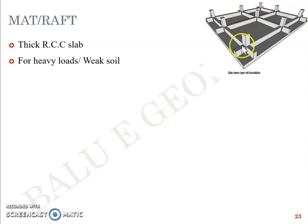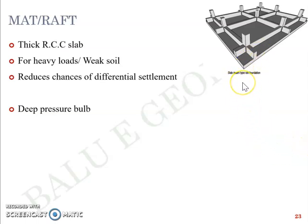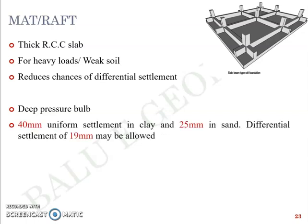When a heavy load is applied, it is redistributed over the area, reducing chances of differential settlement due to unsymmetrical loads. The pressure bulb of a raft or mat foundation is quite deep because the breadth is so huge — the zone in which soil acts as part of the load transfer mechanism is very large. The allowable settlement for a raft on uniform clays is 40mm, and 25mm in sand. The differential settlement stipulated is not more than 19mm.